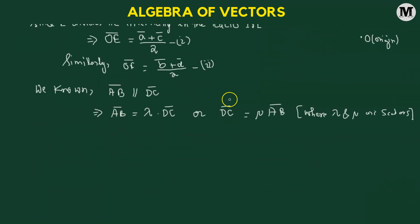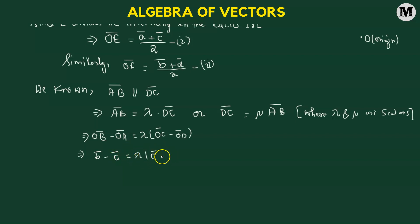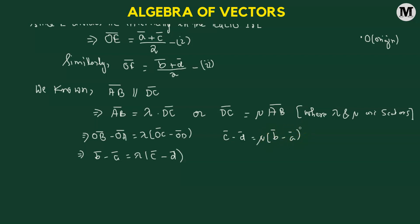Using the fact that AB vector equals lambda times DC vector, we express in terms of position vectors: B vector minus A vector equals lambda times (C vector minus D vector). Similarly, for DC vector equals mu times AB vector: C vector minus D vector equals mu times (B vector minus A vector). We will use these facts going forward.